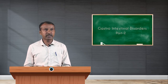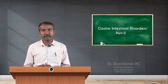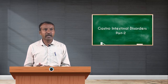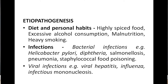The pathogenesis of acute gastritis is mainly related to diet and personal habits. Highly spiced food can cause acute gastritis, as can excessive alcohol consumption, malnutrition, and chain smoking (continuous smoking without a balanced diet). Even smoke that irritates the gastric mucosa can be a contributing factor.